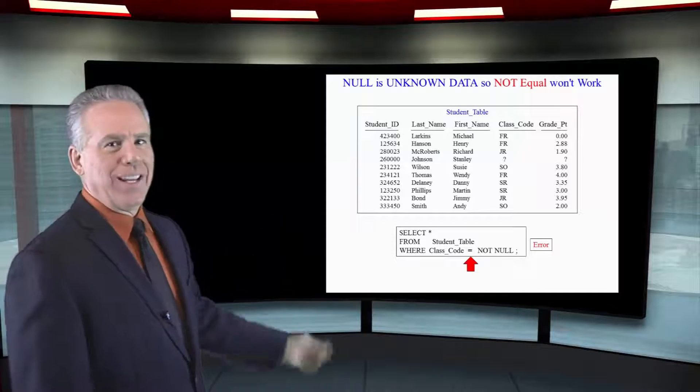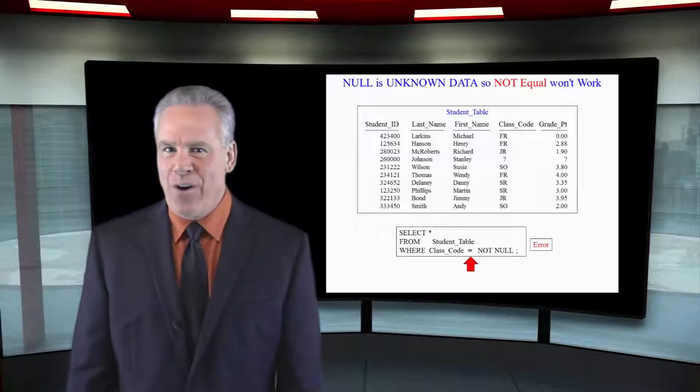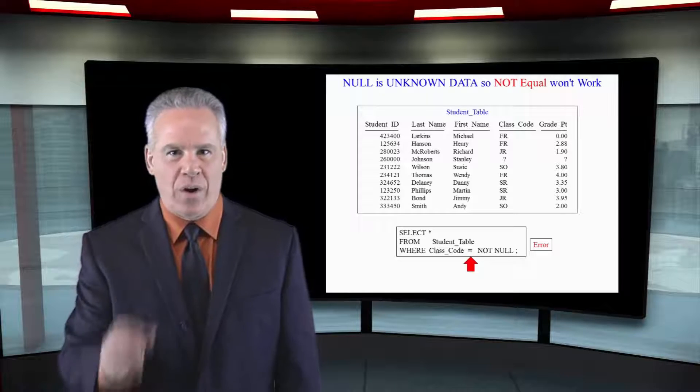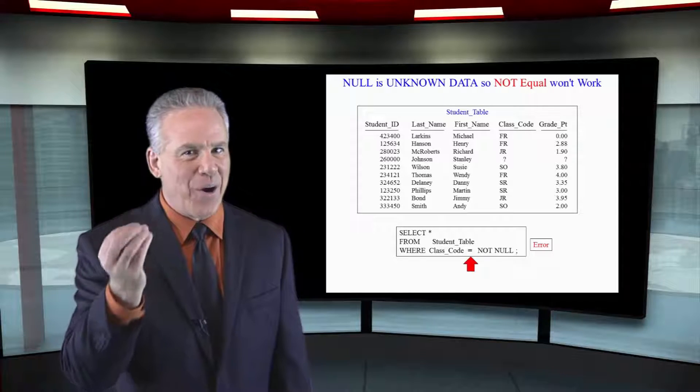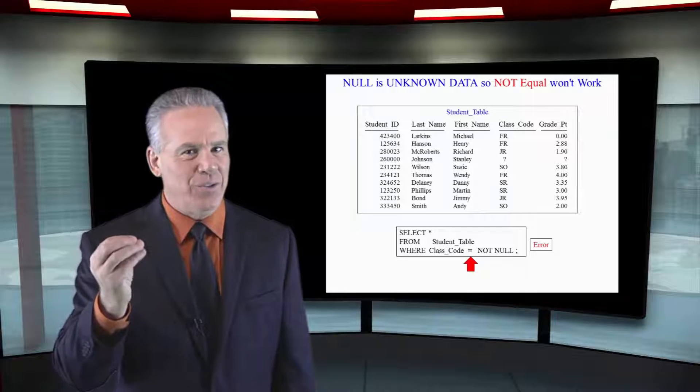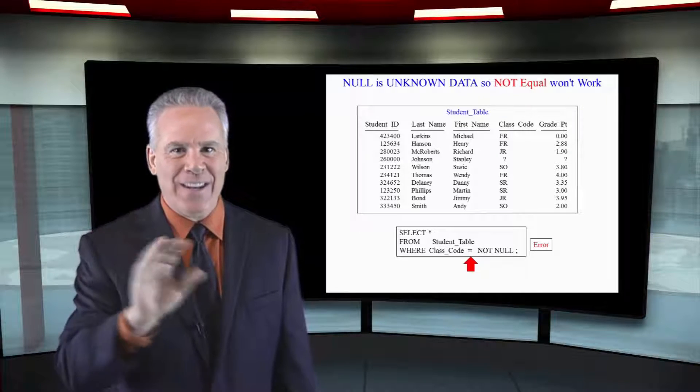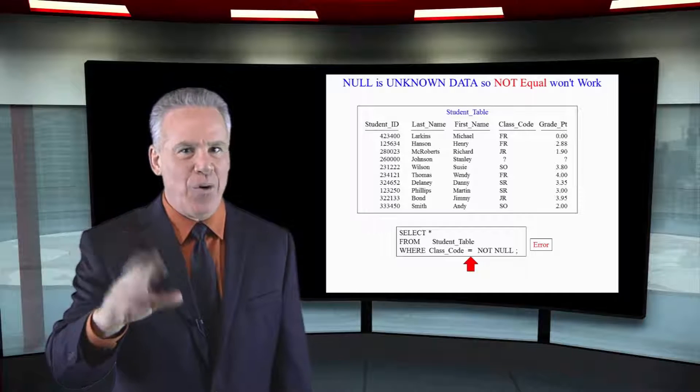Can you spot the error here? Notice that it says WHERE class code equals not null. Anytime you want to find the rows where a particular column has a null in it, you'll have to use either IS NULL or IS NOT NULL. Never associate equal with a null.